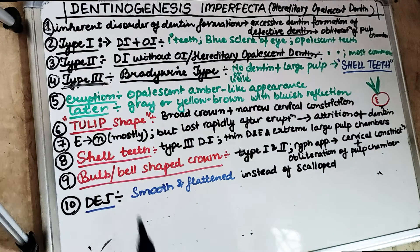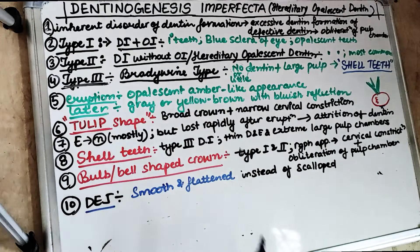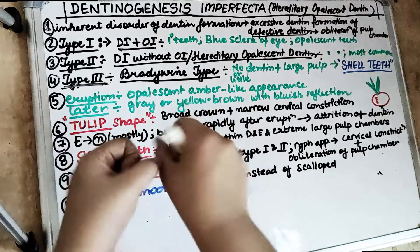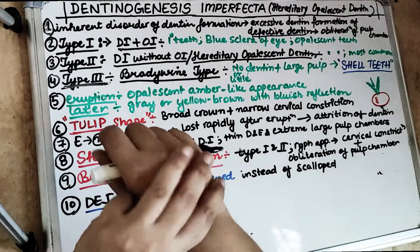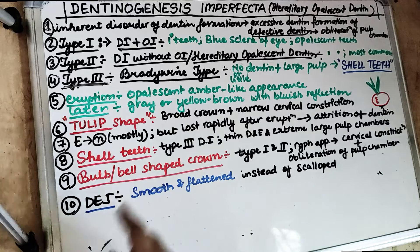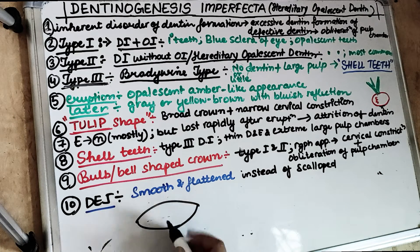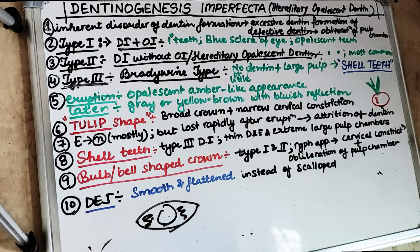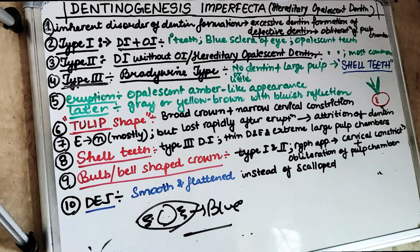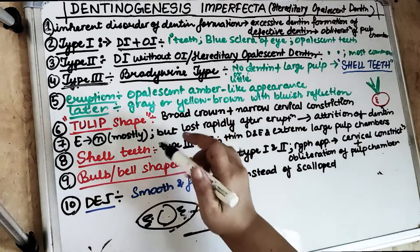There are three types of Dentinogenesis Imperfecta. Type 1 is associated with Osteogenesis Imperfecta, also known as brittle bone disease — where the bones become fragile and prone to breaking easily. In Osteogenesis Imperfecta, the sclera, which is the white part of the eye, starts becoming blue. This is known as blue sclera, caused by thinning of the collagen fibers of the sclera.